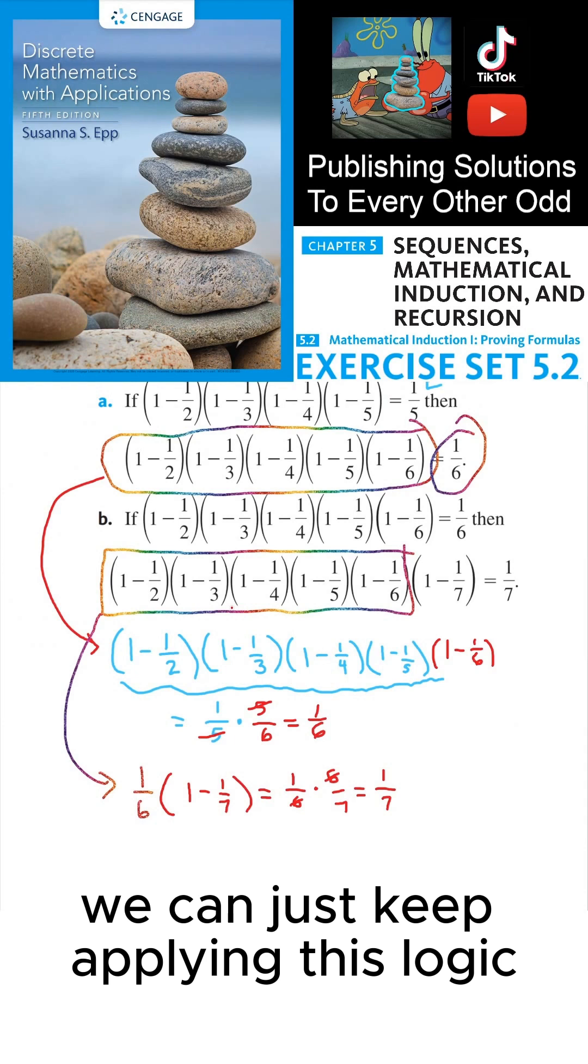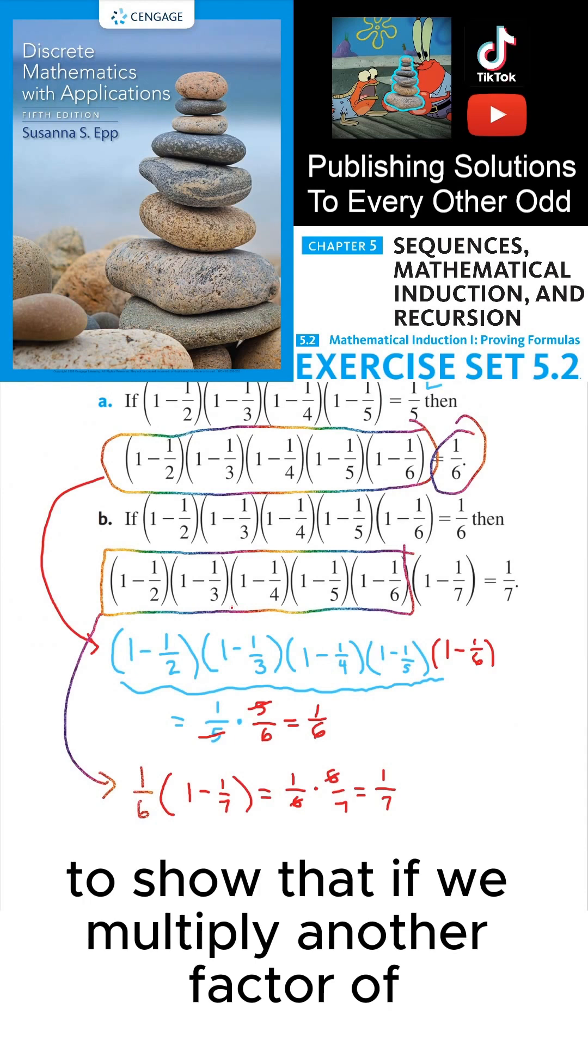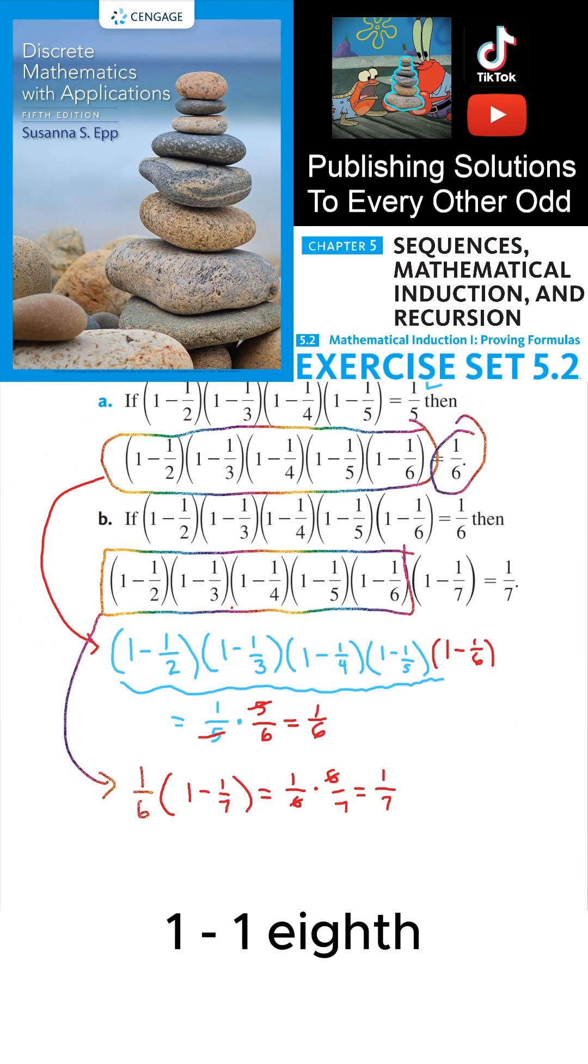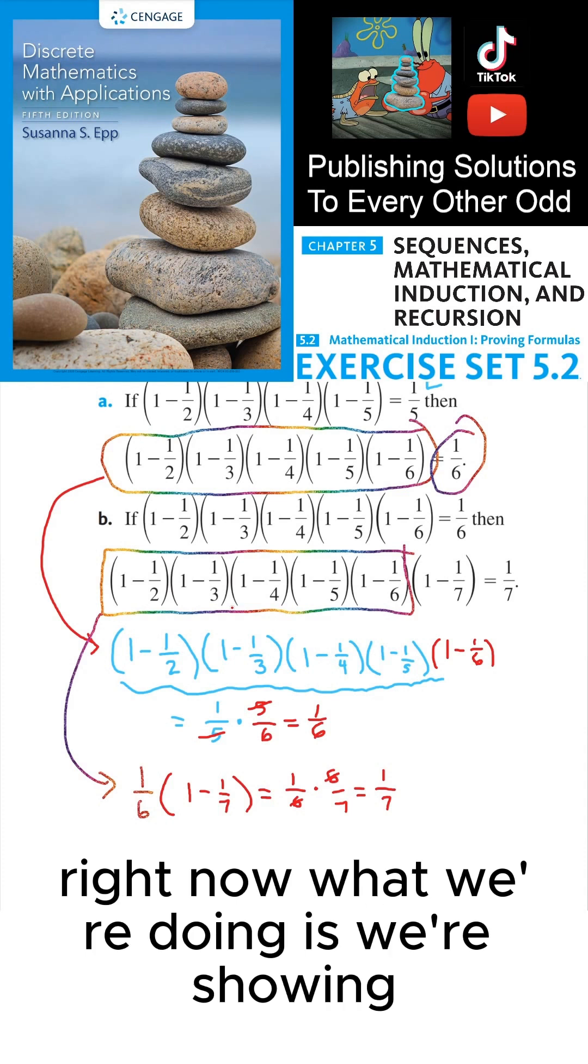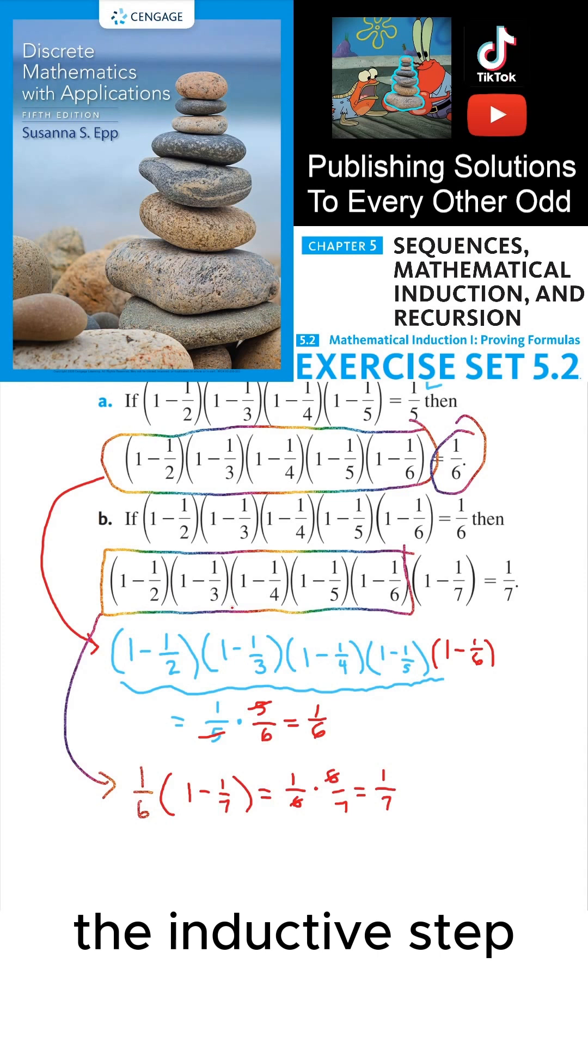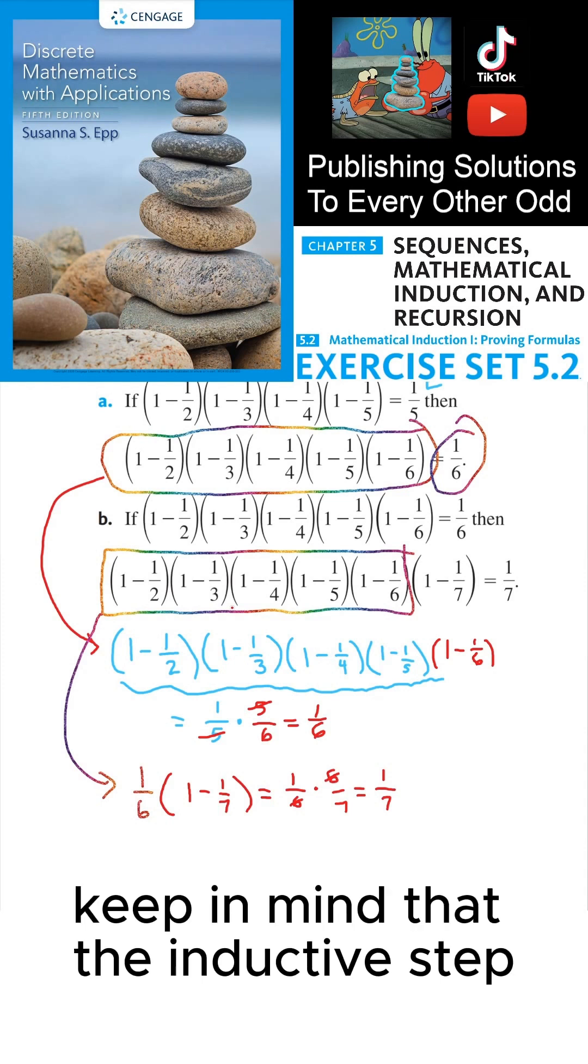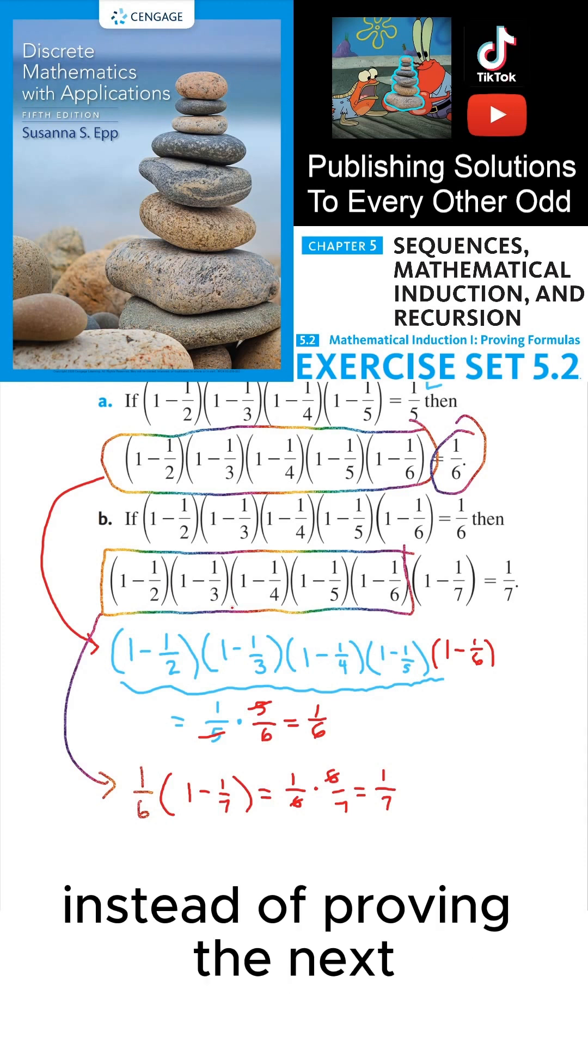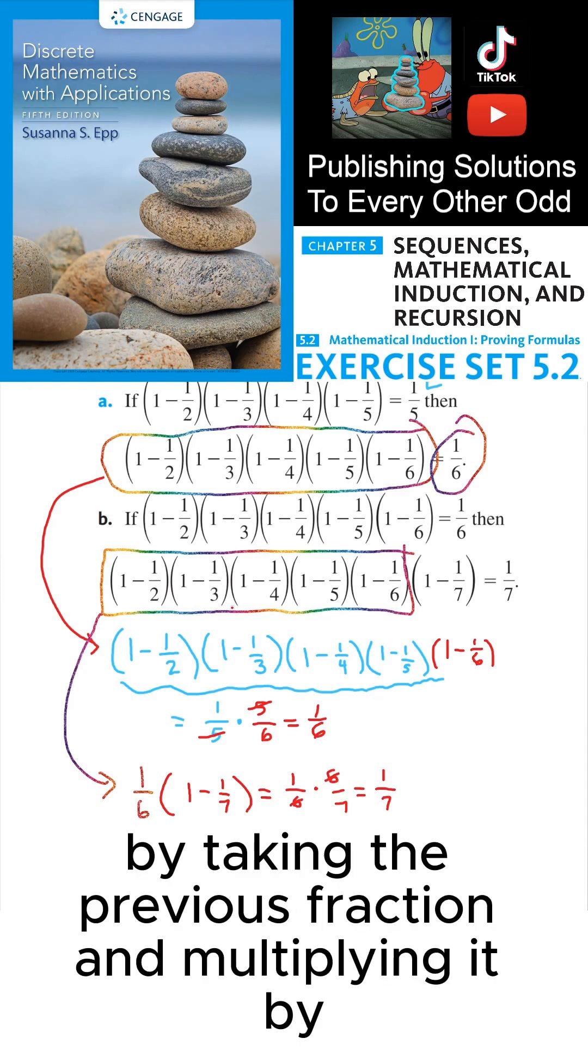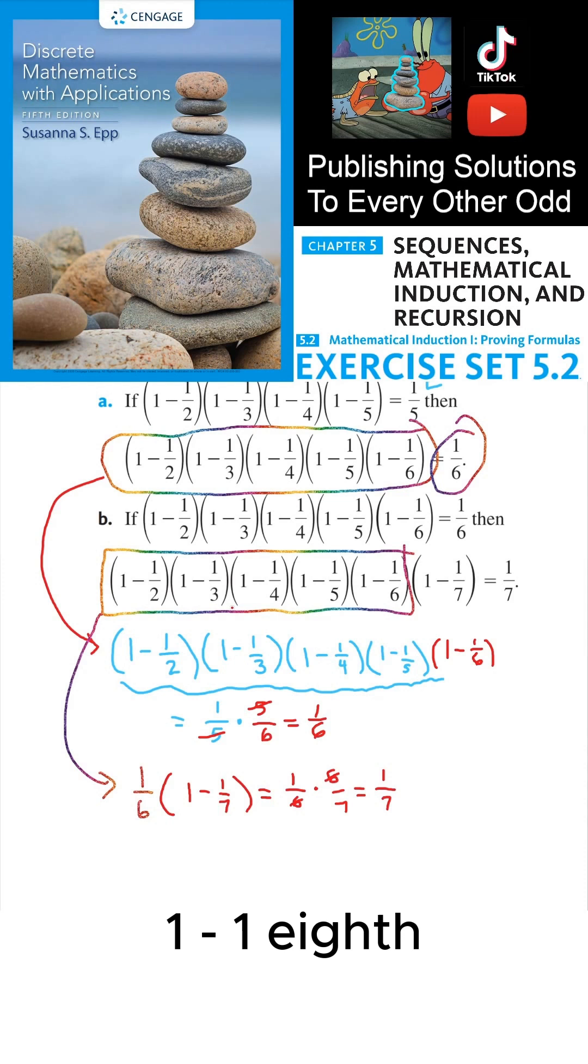And so if you notice, we can just keep applying this logic to show that if we multiply another factor of (1 minus 1/8), we'd end up getting 1/8 at the end. And this really gets to the heart of the inductive step. Right now, what we're doing is we're showing the inductive step case by case. Keep in mind that the inductive step is simply a generalization of this process.